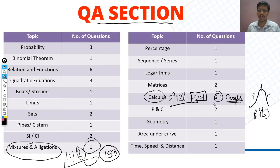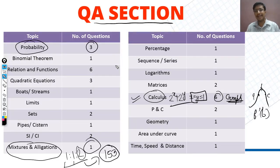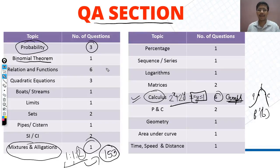The next question was new. Calculus was at a good level overall. Moving to probability — probability had 3 easy questions at a good level. Students who attempted them should have done well, as the concepts were good. Binomial also came — one question on binomial distribution.